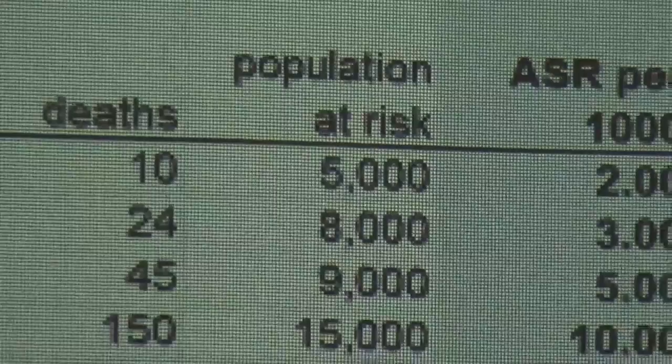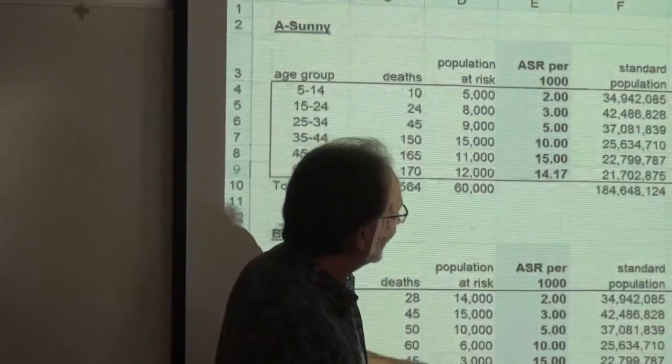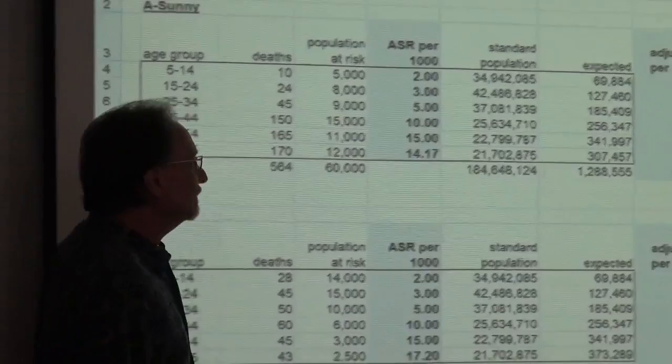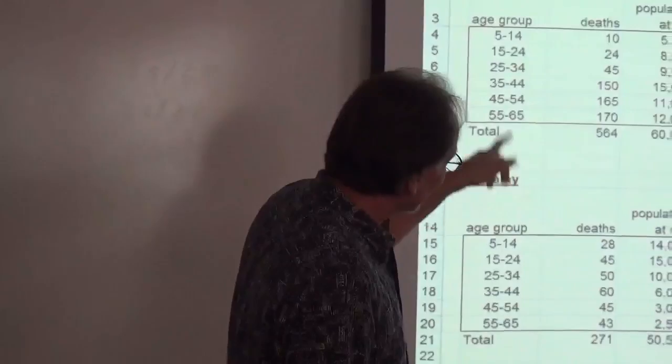Look at the age-specific rates and see if there's any variability there. Then look at the age-adjusted rate, and if it becomes similar, you know that they have fairly equal health statuses, but it's due to something else. In this case, it happens to be the structured population.